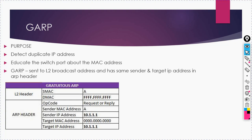There are three things you must be aware about GARP. First, it is sent to the L2 broadcast address. It is very similar to a regular ARP request and has the same sender and target IP address. This is the keyword: same sender and target IP address.